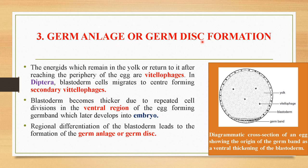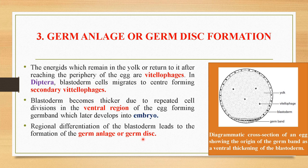The third step is germ analogue or germ disc formation. The energids which remain in the yolk after the others reach the periphery are called vitelophages. In some insects like Diptera, blastoderm cells migrate to the center forming secondary vitelophages — this is an important topic for competitive exams. The blastoderm becomes thicker due to repeated cell divisions in the ventral region of the egg, forming the germ band which later develops into the embryo. This regional differentiation of the blastoderm leads to the formation of the germ analogue or germ disc.